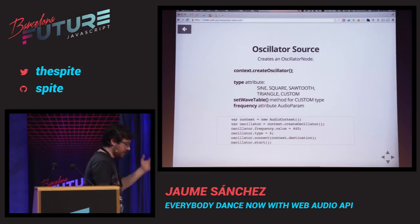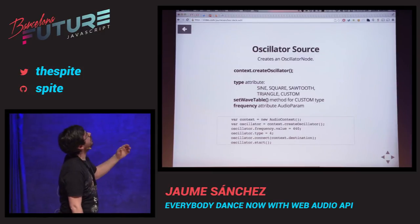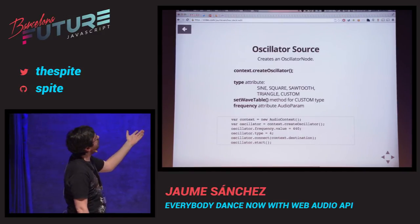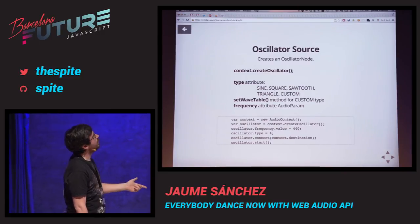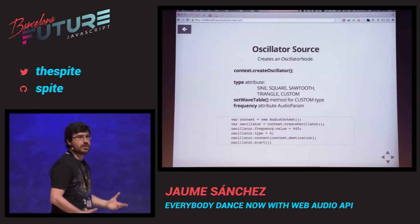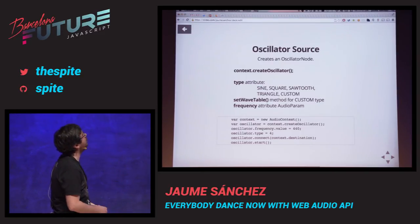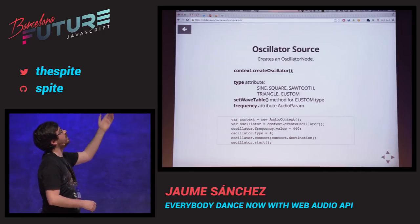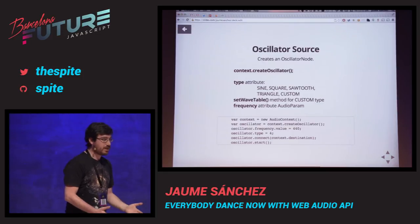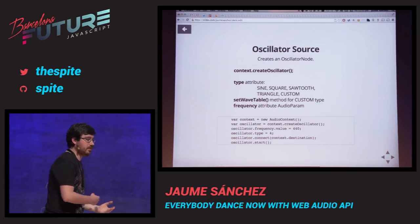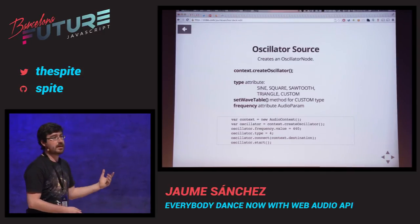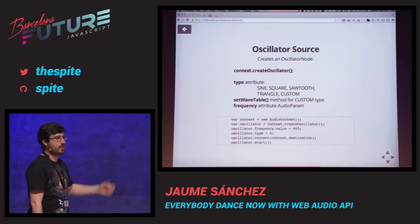Another source is the oscillator source. You create it with createOscillator() and assign a type. There are five types: sine wave, square wave, sawtooth, triangle, and custom. If you use custom, you have to specify your custom cyclical wave with setWaveTable(). There's a frequency attribute — it's an AudioParam — so you can specify a frequency for your oscillator or LFO, schedule it, ramp it. You can start creating your own synthesizer with oscillators.